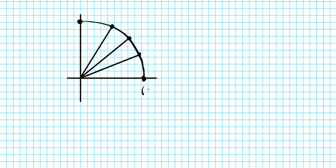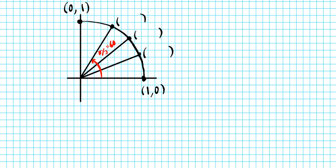Remember, this is a unit circle so the radius is one. Starting from one to the right where the y coordinate is zero, all the way to where you have an x coordinate value of zero and a y coordinate value of one. Your reference angles for the unit circle in the first quadrant are: pi over 3 (which is 60 degrees), pi over 4 (which is 45 degrees), and pi over 6 (which is 30 degrees).